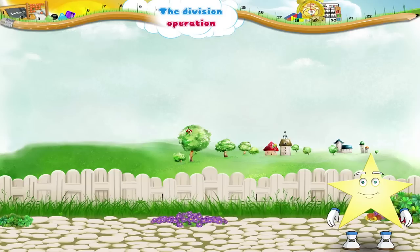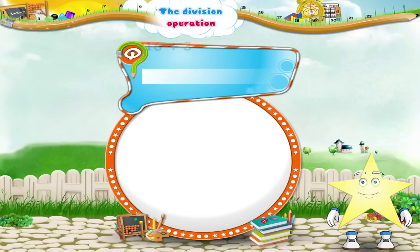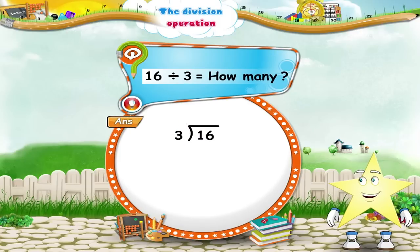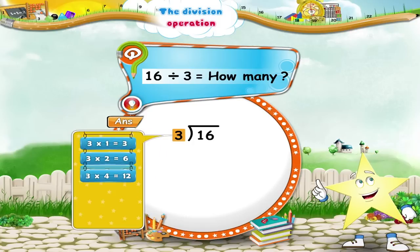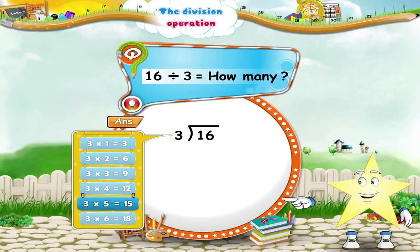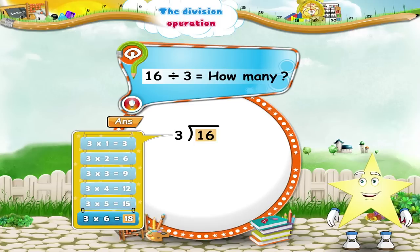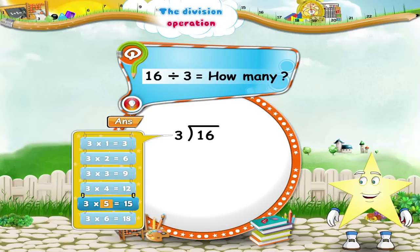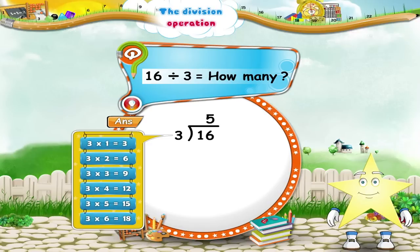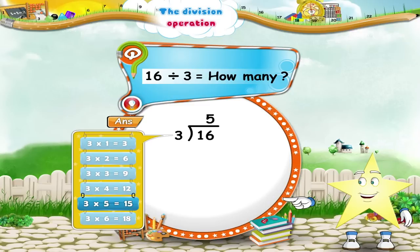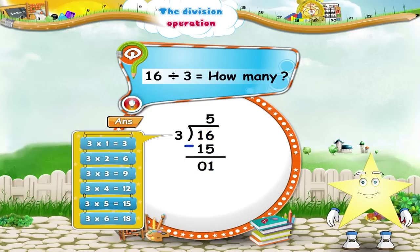Now look at this example Starry. 16 divided by 3 equals how many? Say the 3 times table up to 16. 3 5's are 15. 3 6's are 18. 18 is bigger than 16, so we will stop at 3 5's. Write 5 above the line in the quotient. Now, 3 5's are 15. From the Dividend 16, subtract the product 15. The remainder is 1.